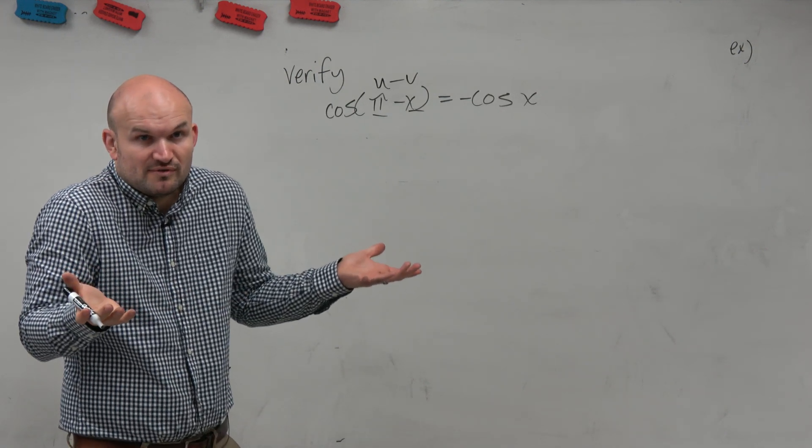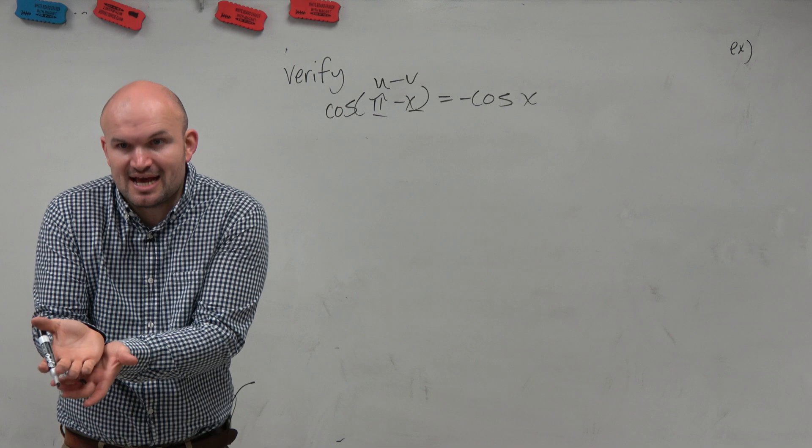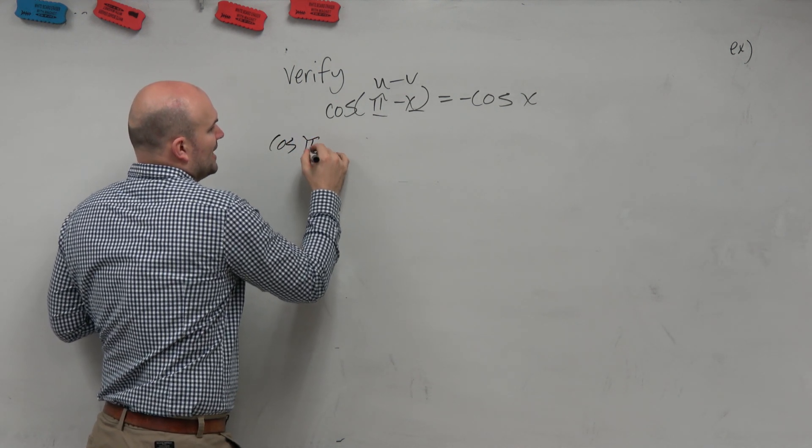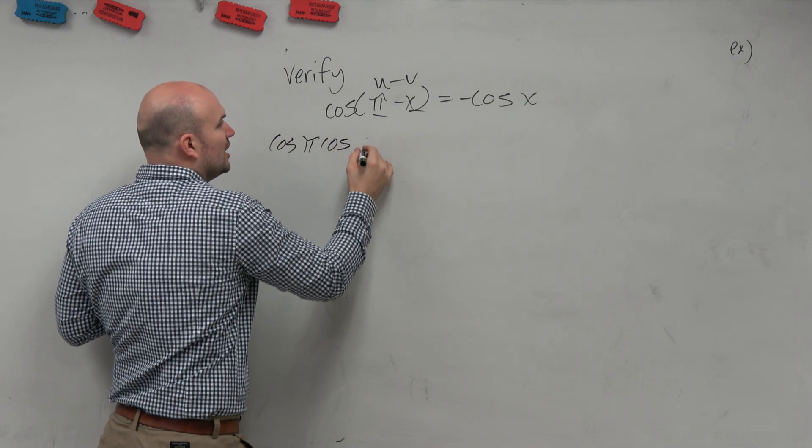So can we just use the formula? I mean, we're going to have it on our test. So it's not a co-function identity. So why don't we do cosine of π times cosine of x.